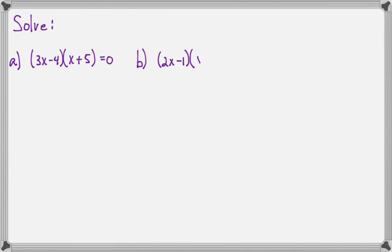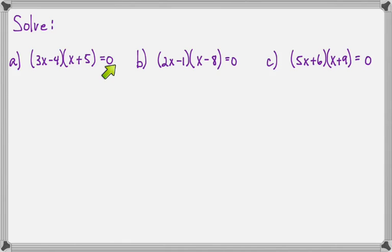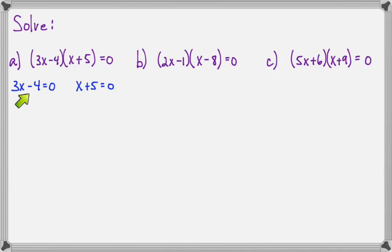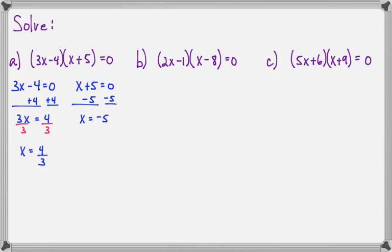So let's solve a few of these together. The first one says (3X minus 4) times (X plus 5) equals zero. One of these parentheses must be zero. If 3X minus 4 is zero, we add 4 to both sides to get 3X equals 4, then divide both sides by 3 to get X equals 4 over 3. For the second factor, we subtract 5 from both sides to get X equals negative 5. So our two solutions are 4 thirds and negative 5.